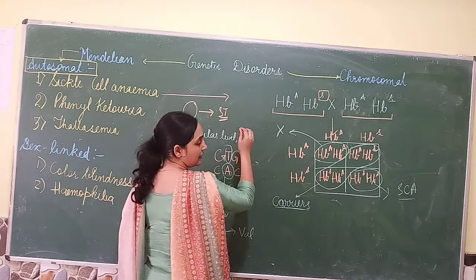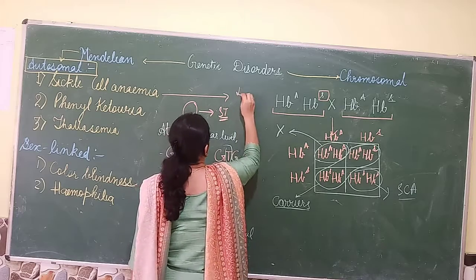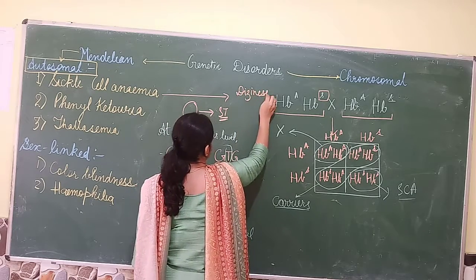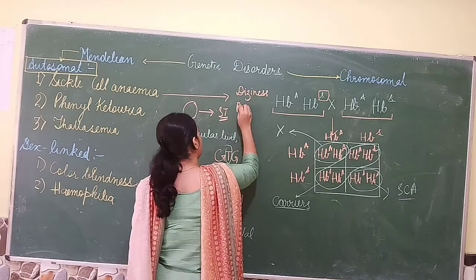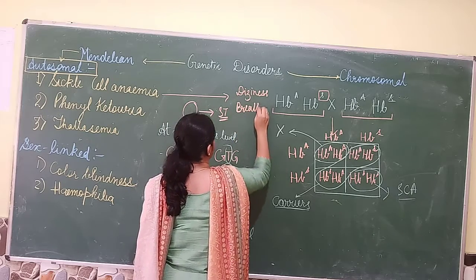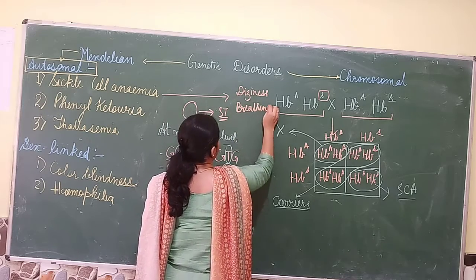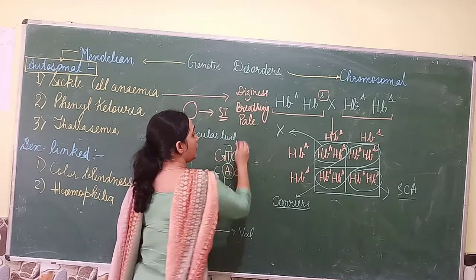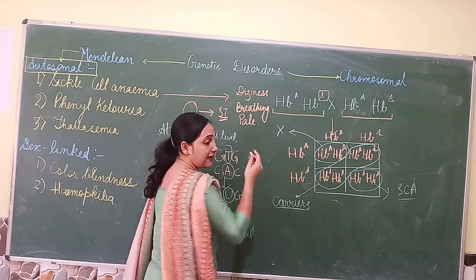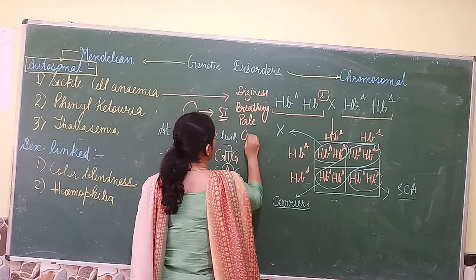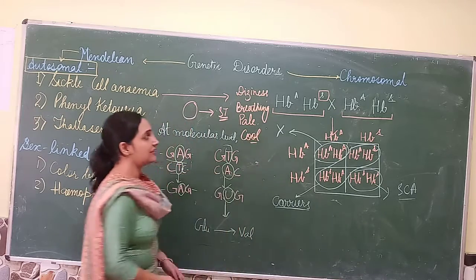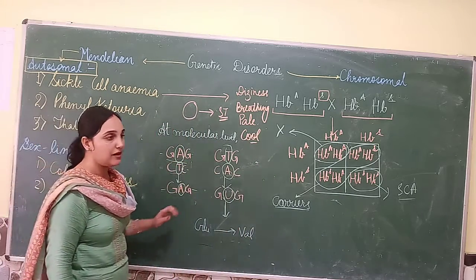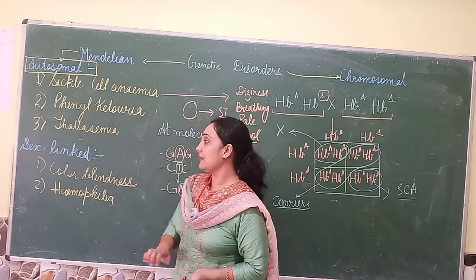The symptoms of sickle cell anemia include dizziness, breathing problems, body pain, and swelling of hands and feet. These are the symptoms which are related to sickle cell anemia.